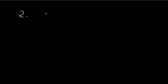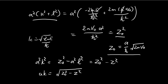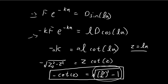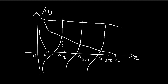For a narrow and shallow well, a and V₀ are both small, so z₀ is small. The right-hand side curve intersects the z-axis at a small value, and if z₀ is too small, the curve doesn't reach the first branch of -cot(z), which starts at π/2. In that case, there are no intersections and no solutions.